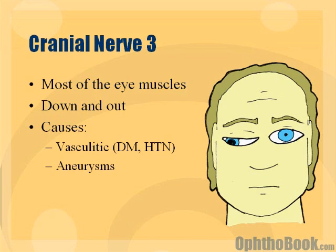It also innervates the levator muscle, and the levator muscle is responsible for keeping the eyelid up. So if you have a cranial nerve 3 palsy, the eyelid will be droopy — you'll have some ptosis.